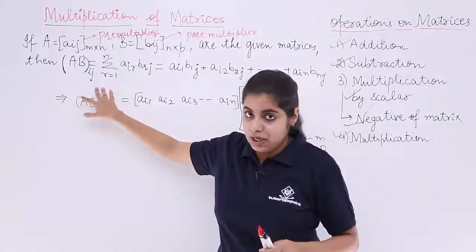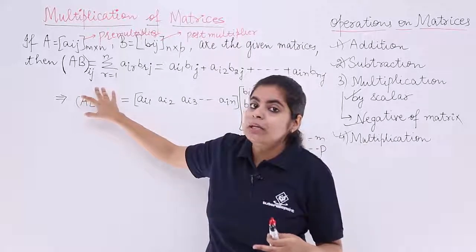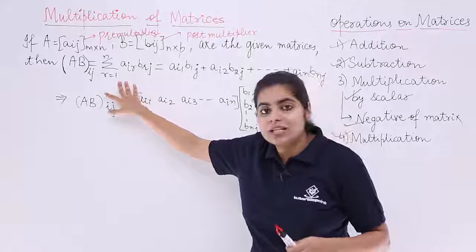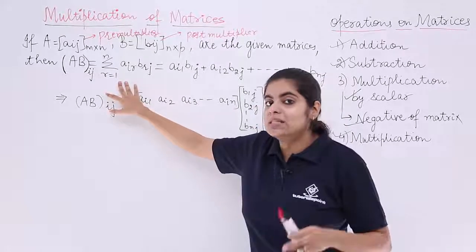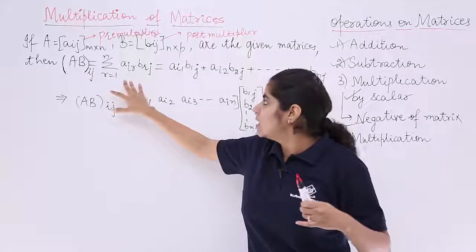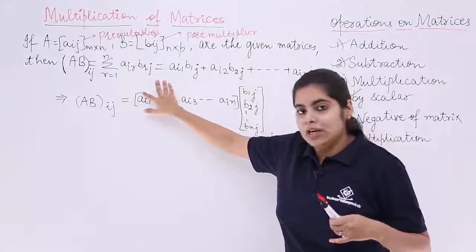So that means AB, IJ will become the product and then summation. I have summation R is equal to 1 to N. So that means the value will be first 1, then R will be 2, then 3 and so on till N. So it is AIR, BRJ.